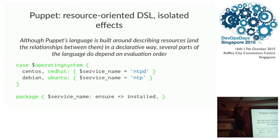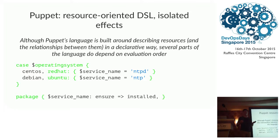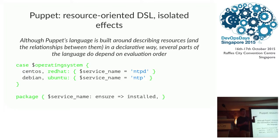Now let me bash on Puppet. Puppet is actually a pretty neat language — it's a resource-oriented DSL that tries to isolate side effects and lets you think in terms of resources. But there's a note in the Puppet documentation saying that although the language is built around describing resources and relations, several parts of the language do depend on evaluation order. Puppet had to get this wrong historically because they changed the language many times, and there are cases where you can redefine scoping using import statements with unclear scoping resolution rules.